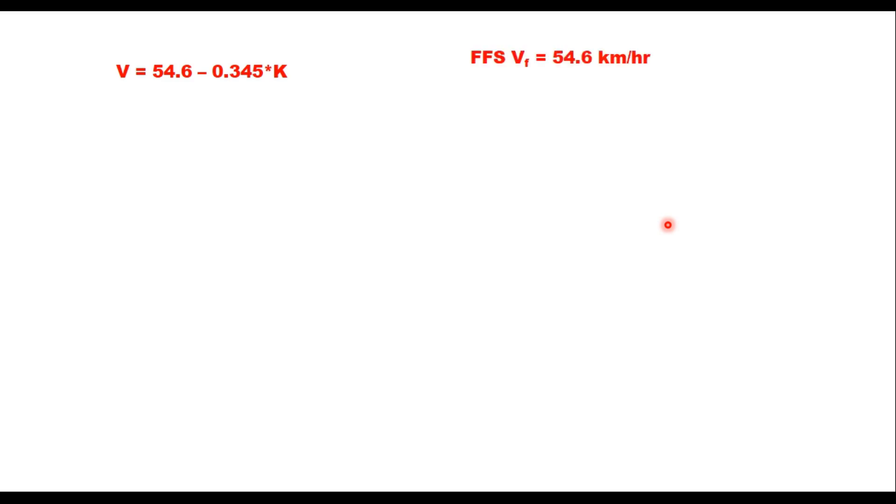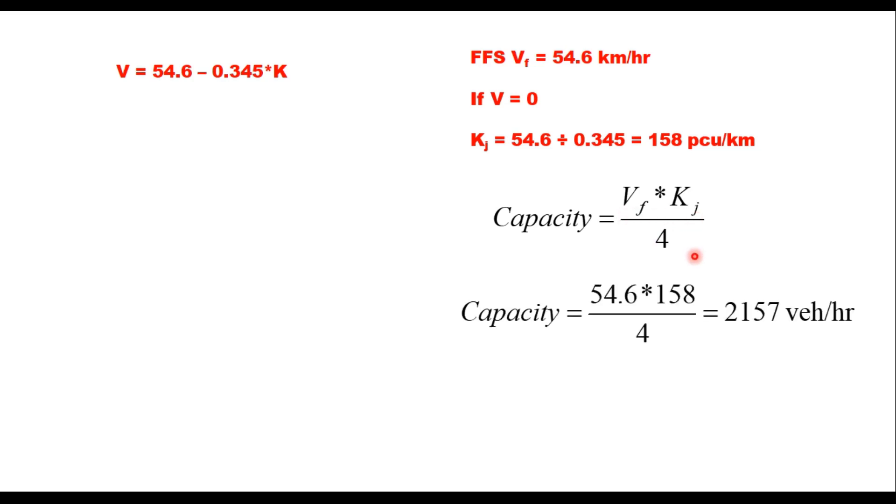If K is 0 that gives you the free flow speed, that is 54.6 km per hour. And if V is 0 then it gives you the jam density which is equal to 54.6 divided by 0.345, the coefficient of K, and that is 158 PCU per kilometer. According to Greenshield model, the capacity is half of free flow speed multiplied by half of jam density, that is Vf into Kj upon 4. Therefore this capacity is 2157 vehicles per hour.